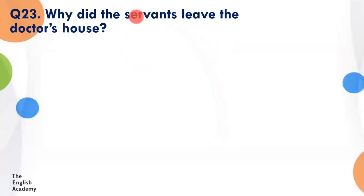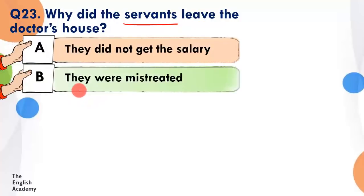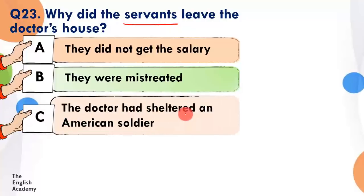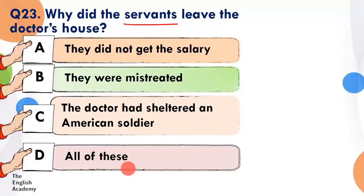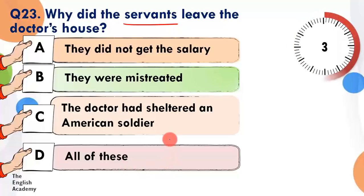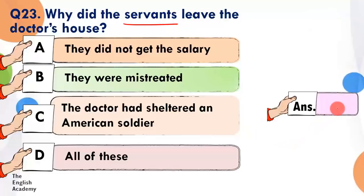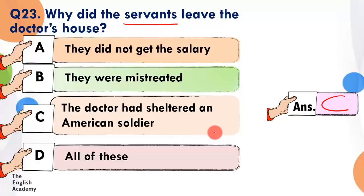Question number 23: Why did the servants leave the doctor's house? Option A: they did not get the salary. Option B: they were mistreated. Option C: the doctor had sheltered an American soldier. Option D: all of these. The answer is Option C — Dr. Sadao had sheltered an American soldier and the servants did not like this, they were afraid, and that is why they left the doctor's house. Bahut hi purane naukars the unke ghar mein, lekin phir bhi woh unka kaam chhod ke chale gaye kyunki unhone ek dushman desh ke soldier ko shelter di thi.